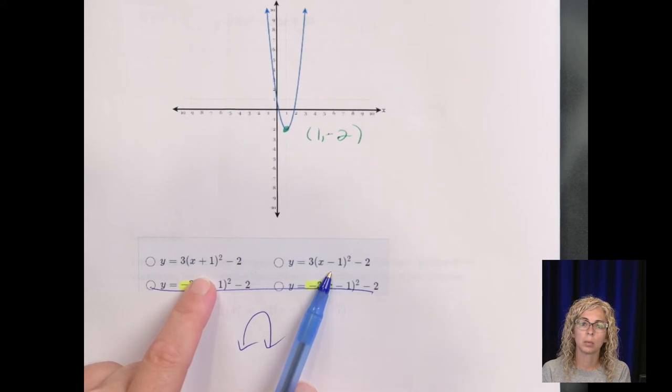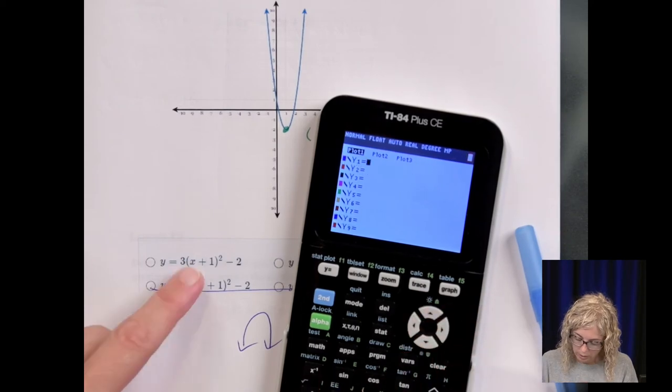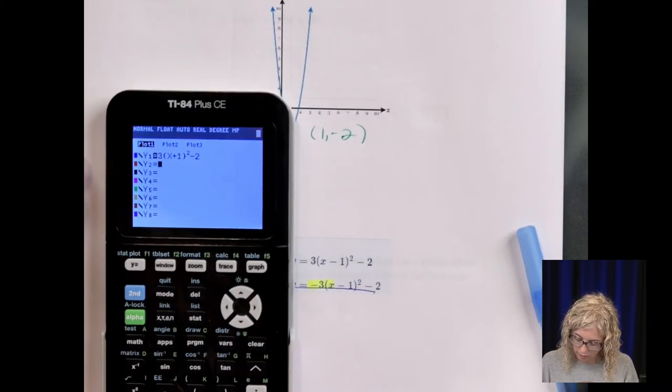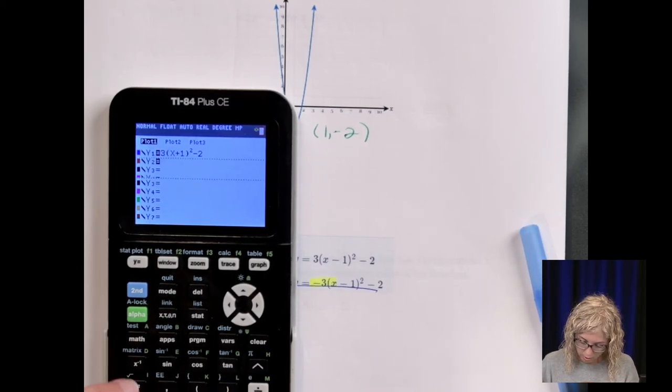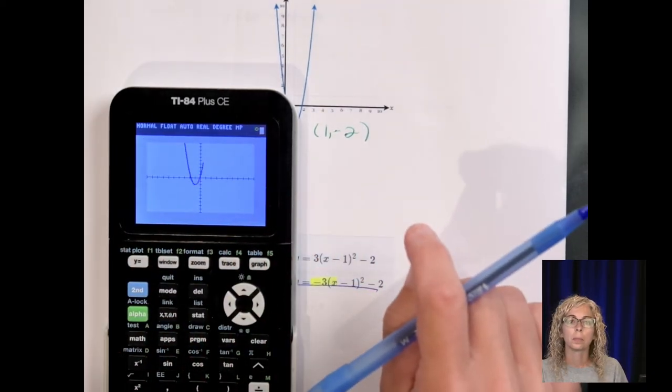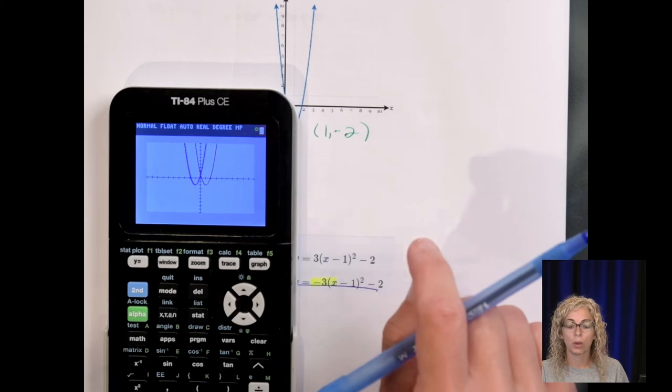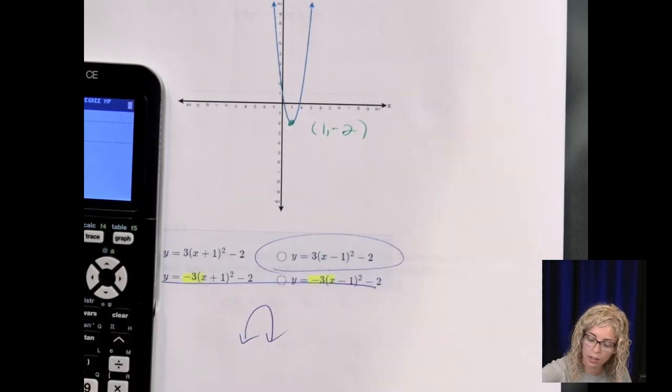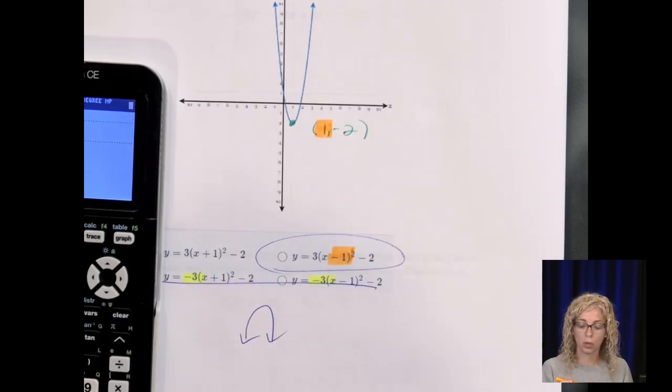Now, is it going to be plus 1 squared or minus 1? So let's go to the calculator. Negative 3 times X plus 1 squared minus 2 and then negative 3 times X minus 1 squared minus 2. So it's either blue or red, red being the second one. So let's see. That's shifted to the left and that one is shifted to the right. So it's the red one, which is X minus 1 squared. So it ends up being opposite. So whatever the 1 is here, it's going to be the opposite negative one down below.